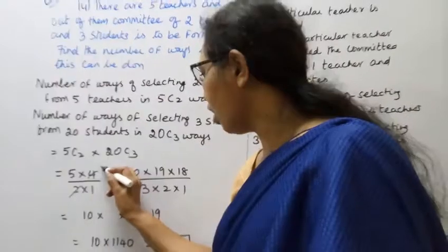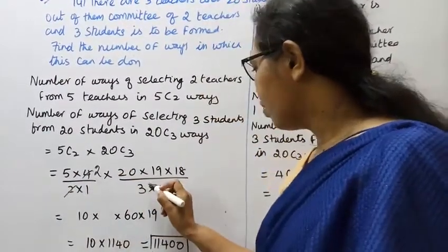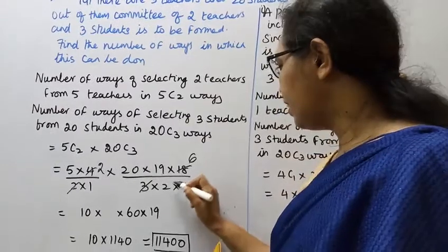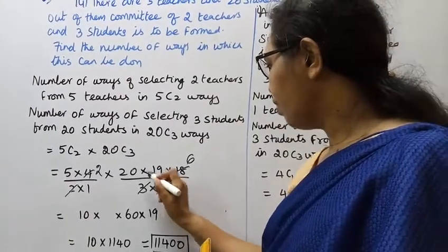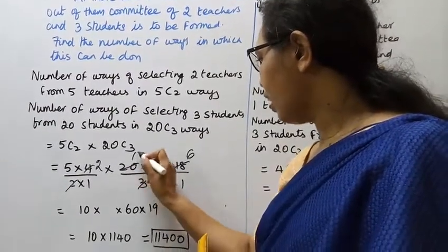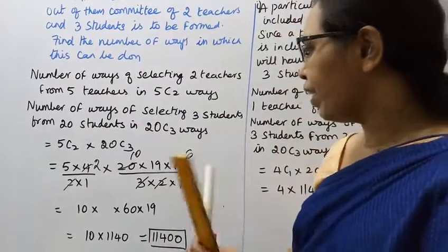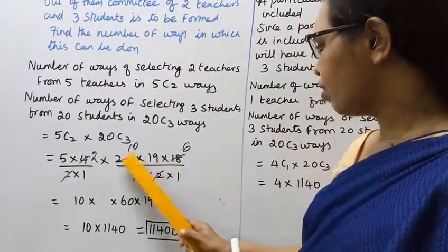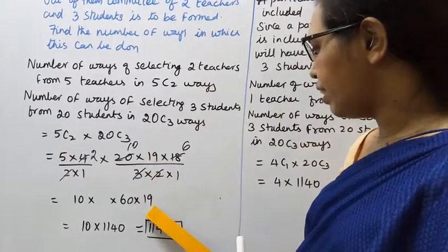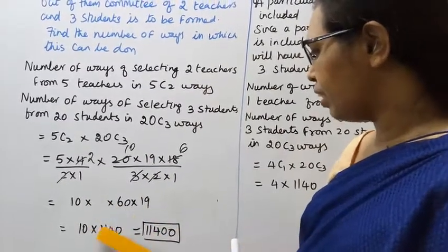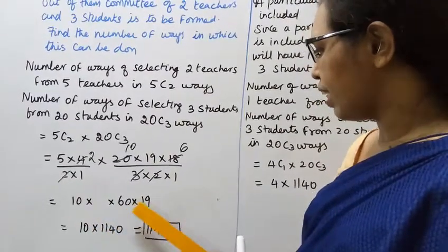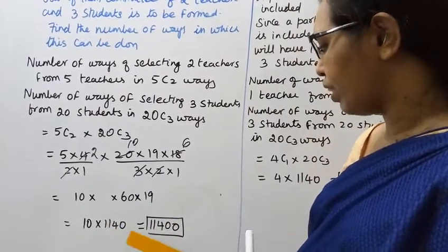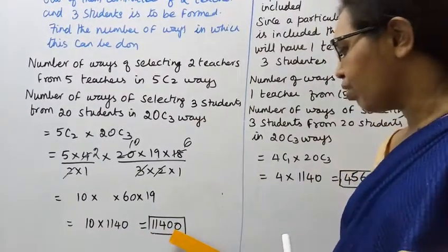Calculating: 2 into 4 is 4, 3 into 6 is 18, 2 into 10 is 20 — so 5C2 equals 10. For 20C3: 6 into 18 gives 18, 6 threes are 18, 5 twos are 10. 10 into 114 equals 1140. Then 10 multiplied by 1140 gives the answer 11400.